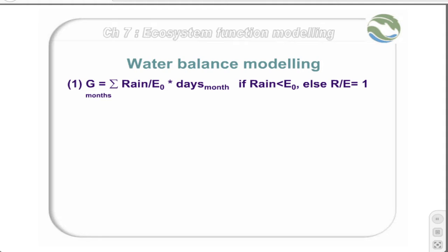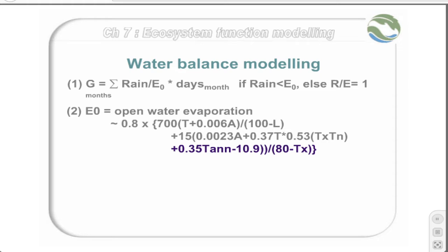Basically, the water balance is the sum for each month of the average daily amount of precipitation divided by the daily evaporation, and multiplied by the number of days in the month. This assumes that the rainfall is greater than the evaporation. If this is not the case, then the rain-over-evaporation term is given to be 1. The E0, or open-water evaporation, is calculated using the second equation. It is worth noting that it incorporates air temperature, the monthly mean, minimum, and maximum, as well as the altitude and latitude of the soil being modelled. This equation was developed by Lineker.